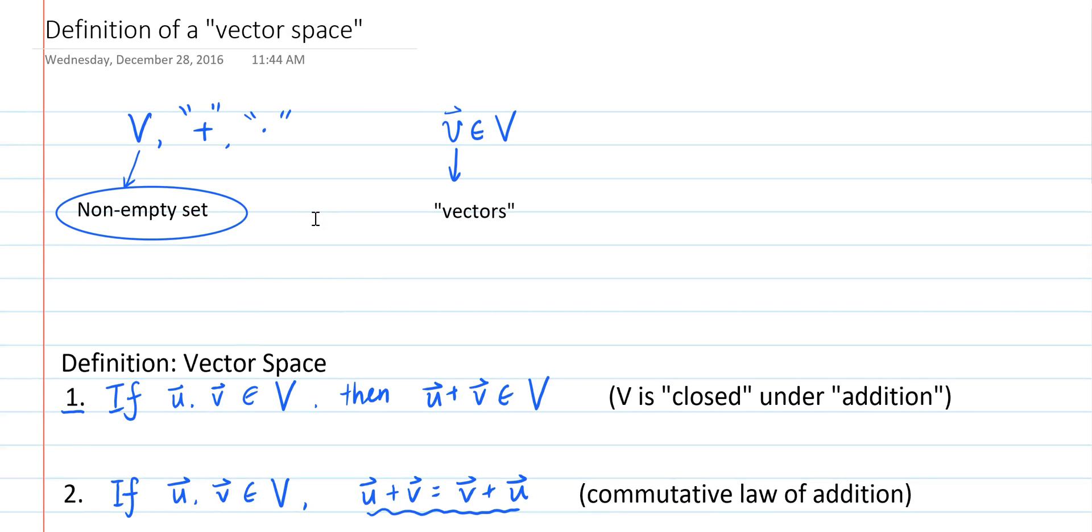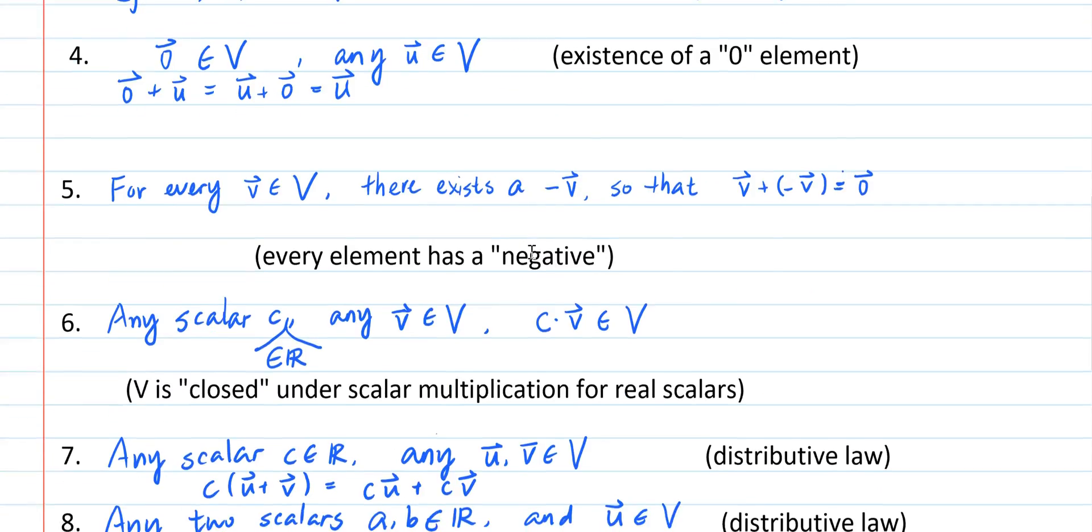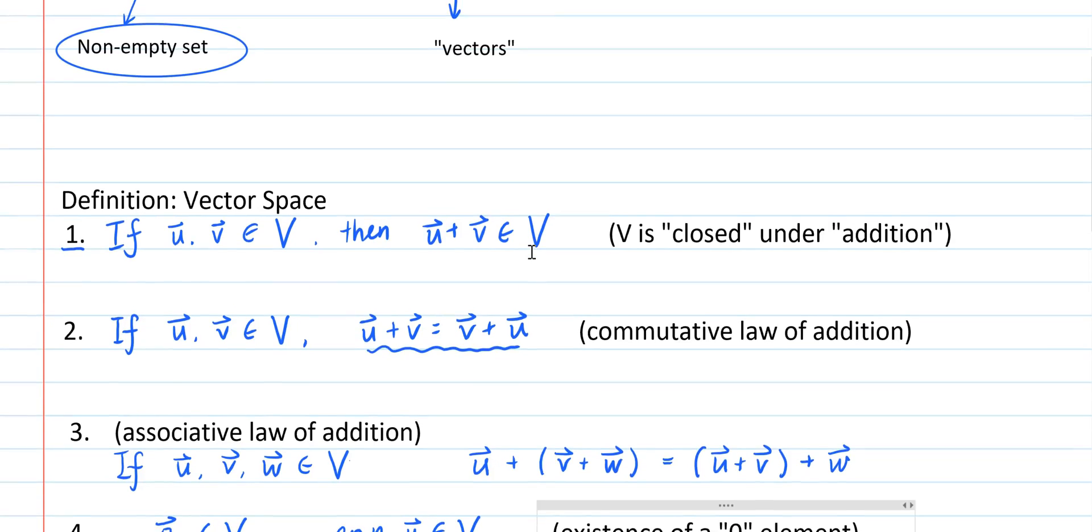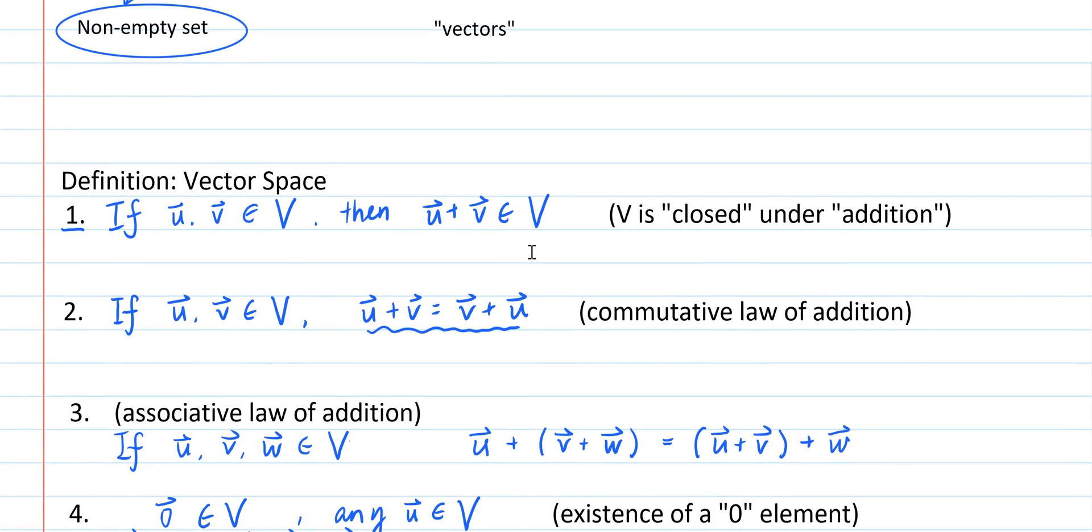What I'm going to show you next is that you don't have to go through all ten of them. You only need to go through two of them, which saves you a lot of time. So which two of those ten axioms do you think are the ones that you actually need to verify, and which eight do you think you can omit?